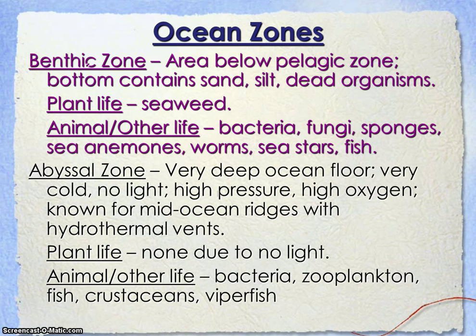Moving further down below the pelagic zone, you're talking about parts of the ocean where you still get sunlight, just not a lot. You get down towards coral reefs and the bottoms of coral reefs. A little bit further than that you'll find your bottom sand dwellers, some dead organisms floating in this area, and a lot of your scavengers — but there's still some light that can sift through to this area.